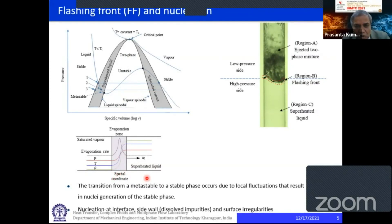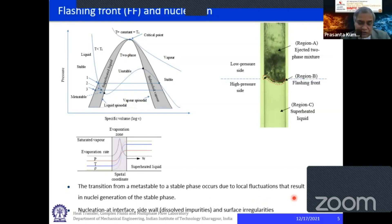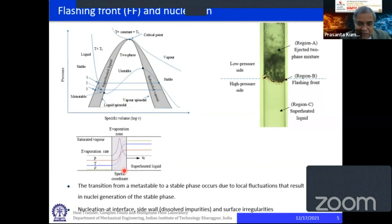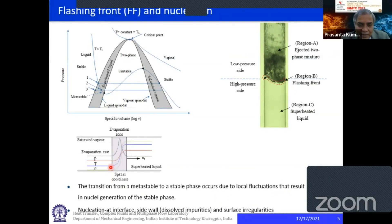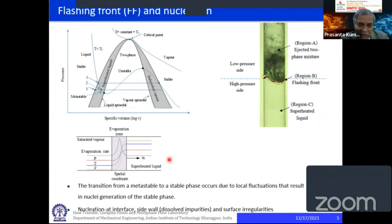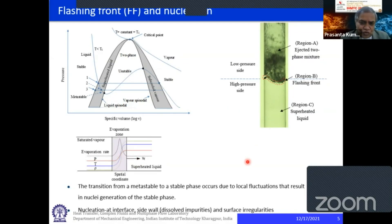The transition from a metastable to a stable phase occurs due to local fluctuation. Nucleation takes place due to local fluctuation — this is a postulation, as there is not much experimental evidence of how nucleation takes place, and not much theoretical analysis has been done on nucleation. But it is assumed that due to some sort of disturbance, nucleation takes place in one region, then in the next region, and so on — that is how the flashing front propagates. A good model for this nucleation process and transport process has not yet emerged, but some videos will try to make this point clear.